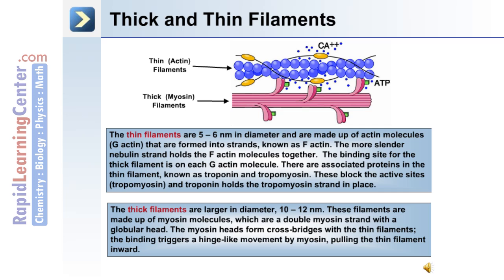The thick filaments are larger in diameter, between 10 and 12 nanometers, and are made up of myosin molecules, which are a double myosin strand with a globular head. The myosin heads form cross bridges with the thin filaments. The binding triggers a hinge-like movement by myosin, pulling the thin filament inward.